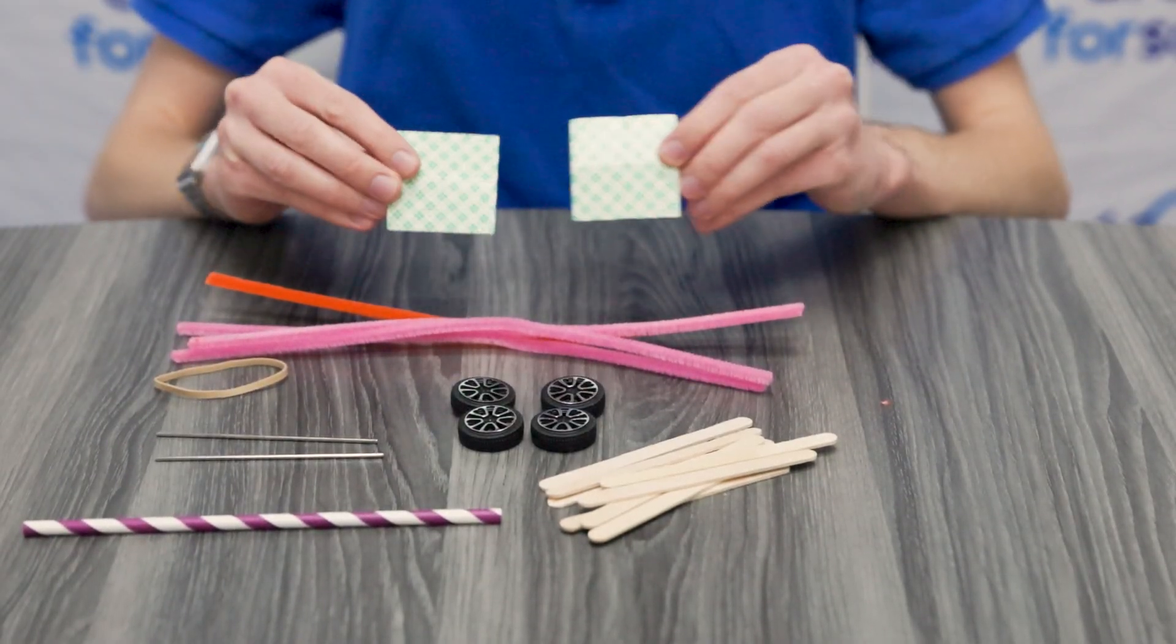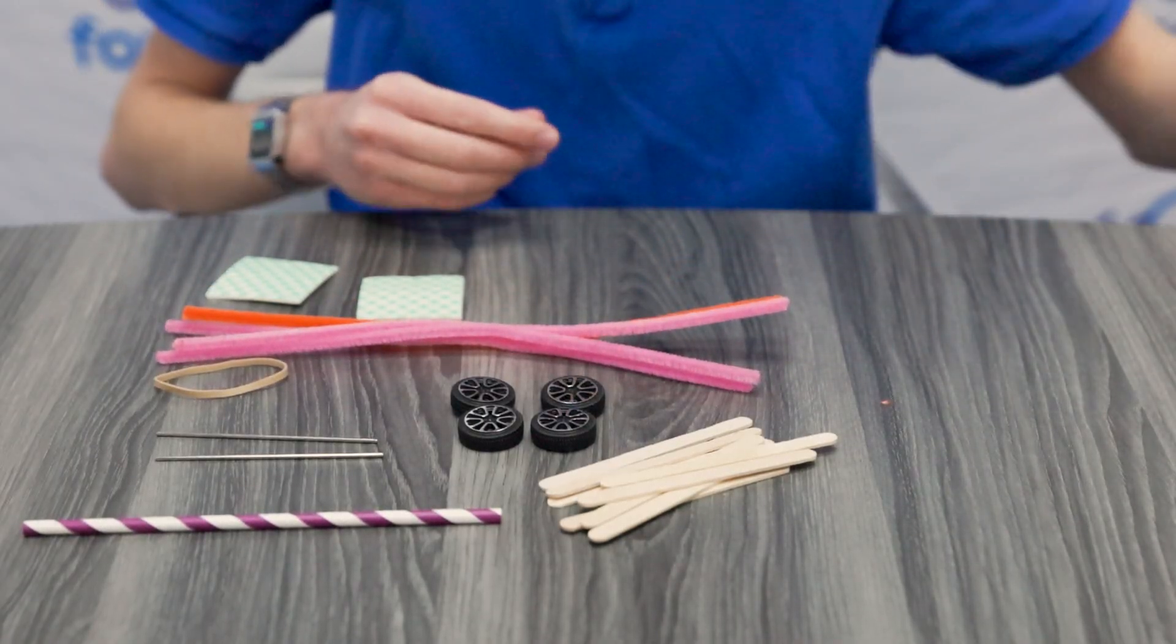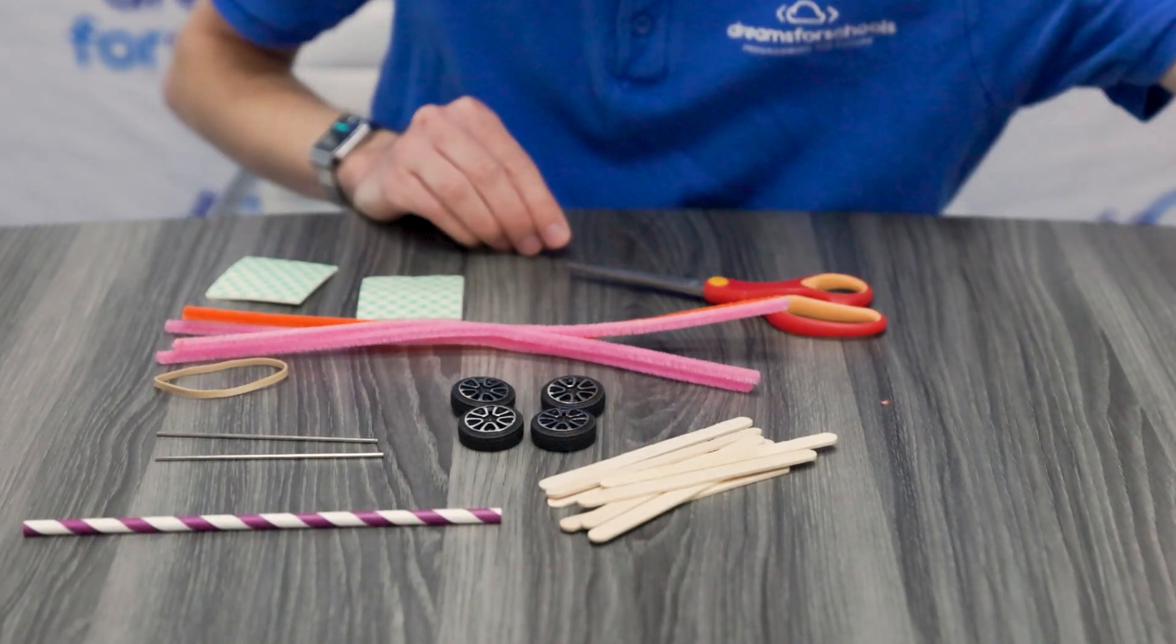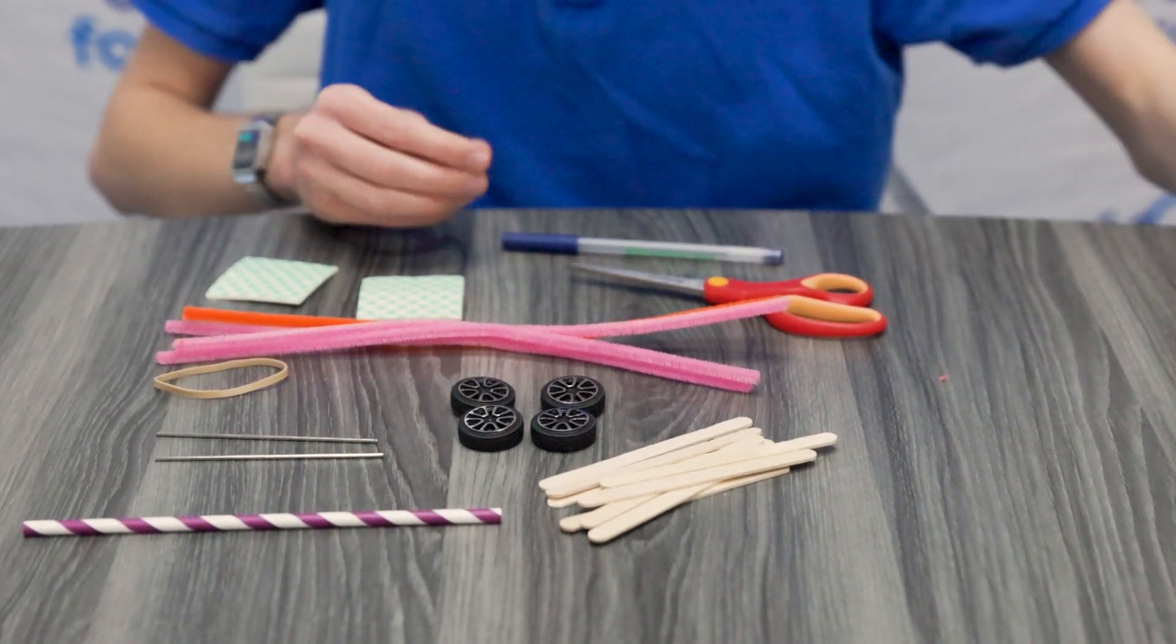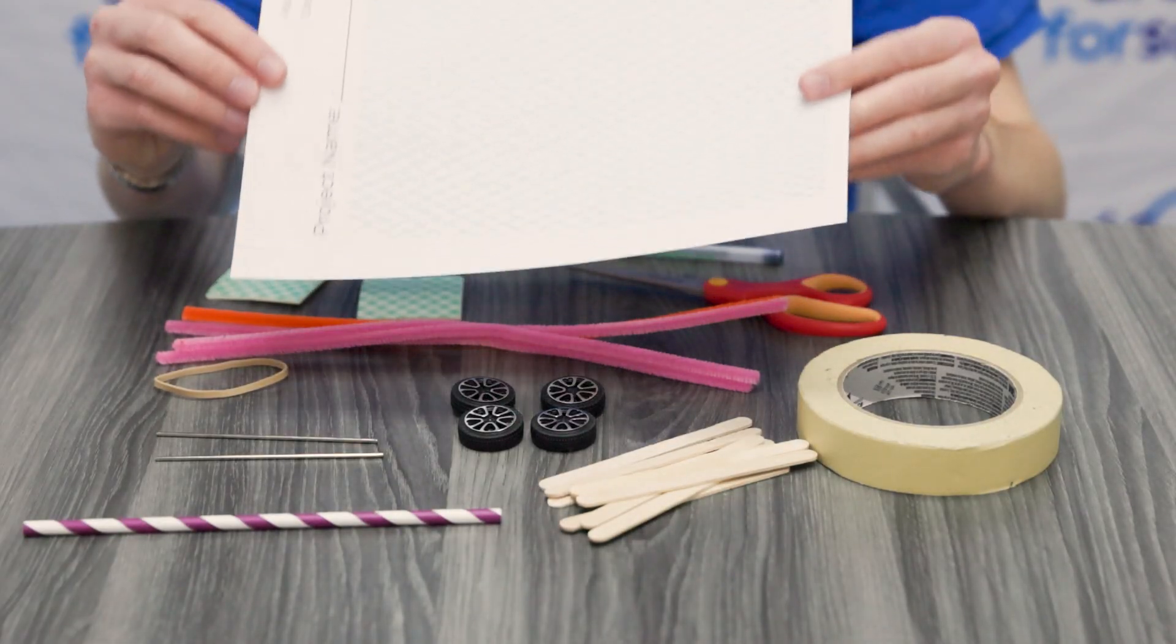Eight small popsicle sticks, four plastic wheels, four pipe cleaners, and optionally up to eight double-sided squares. Outside of our project bag we will also need a pair of scissors, a pen or a pencil, some tape, as well as one blueprint worksheet.